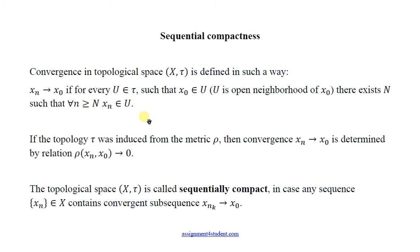In case the topology was induced from the metric, the convergence is determined by this relationship that the metric ρ(x_n, x_0) converges to zero. The topological space is called sequentially compact if any sequence from X contains convergent subsequence.